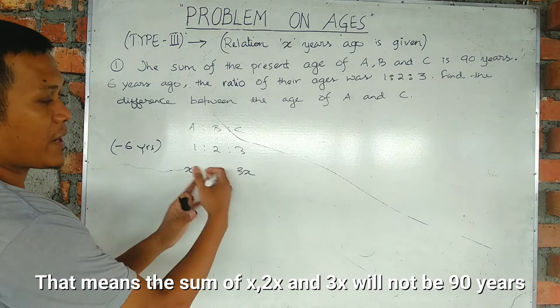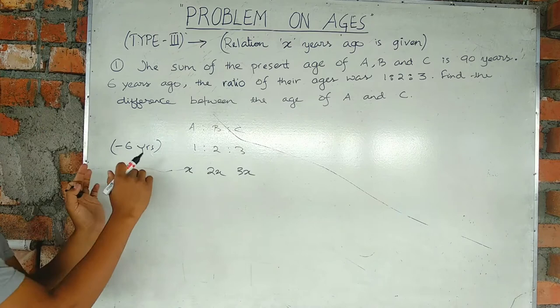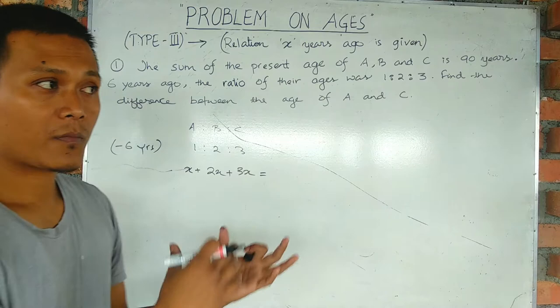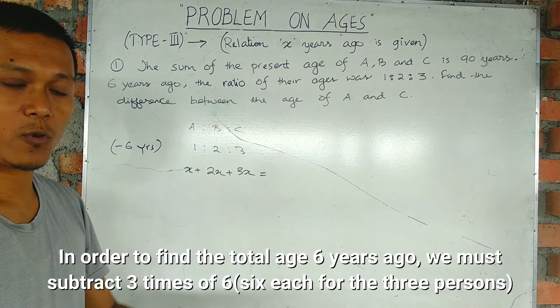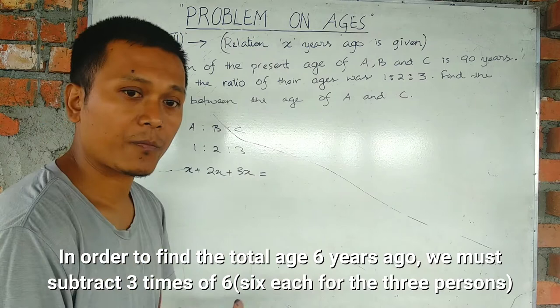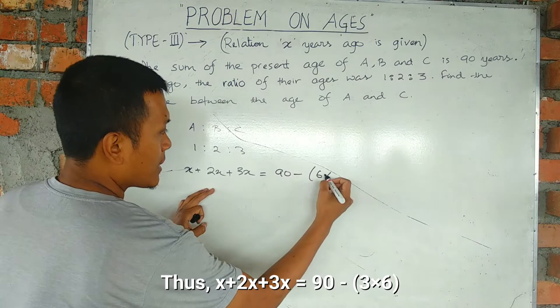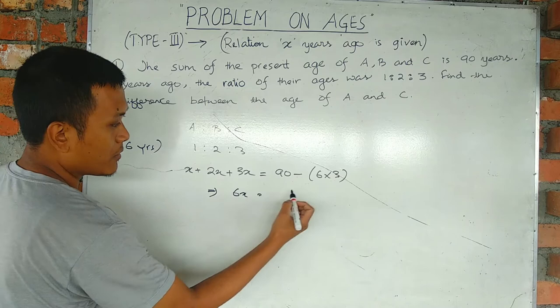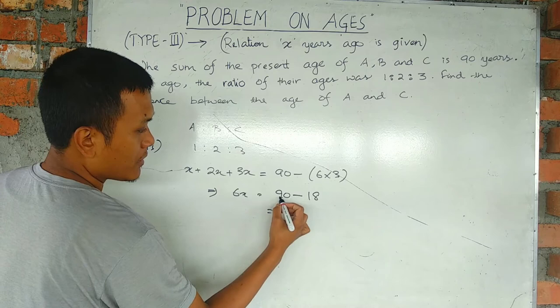The ratio is 6 years ago. The total age, the present, becomes A plus B plus C equal to 90. Six years ago, we need to subtract 6 from each. The equation becomes 6x equal to 90 minus 18.